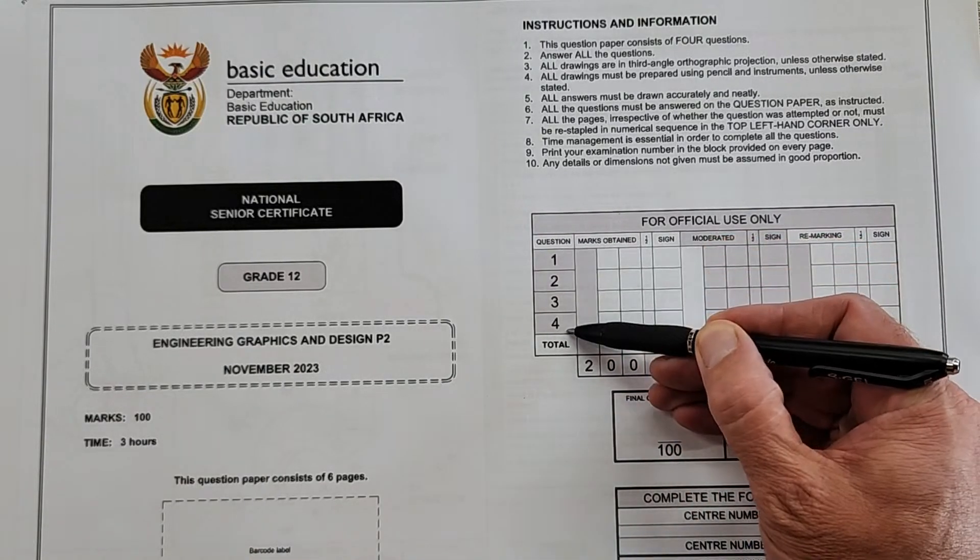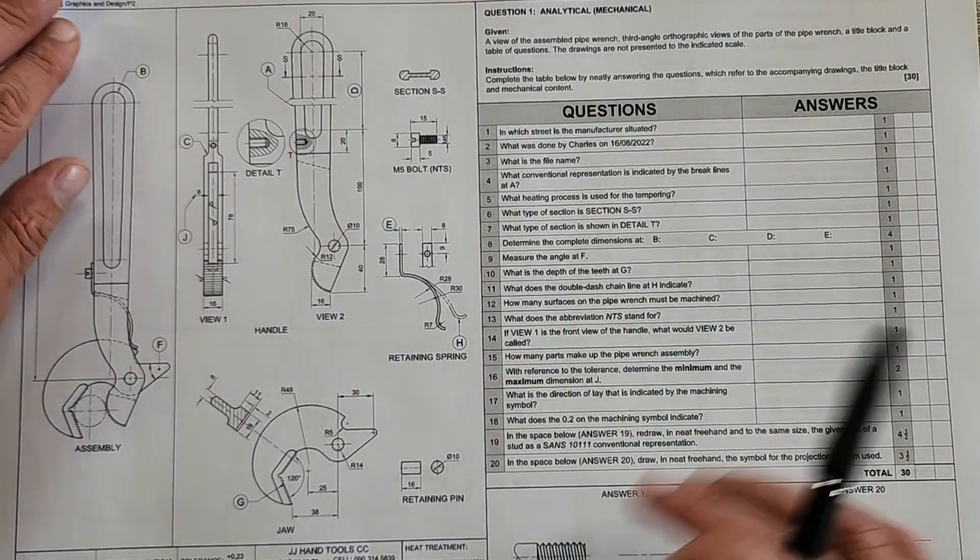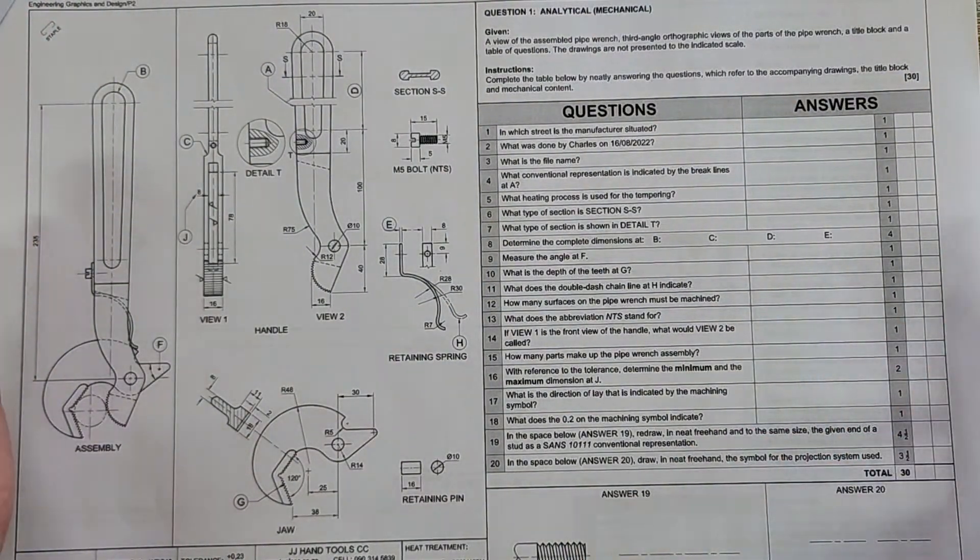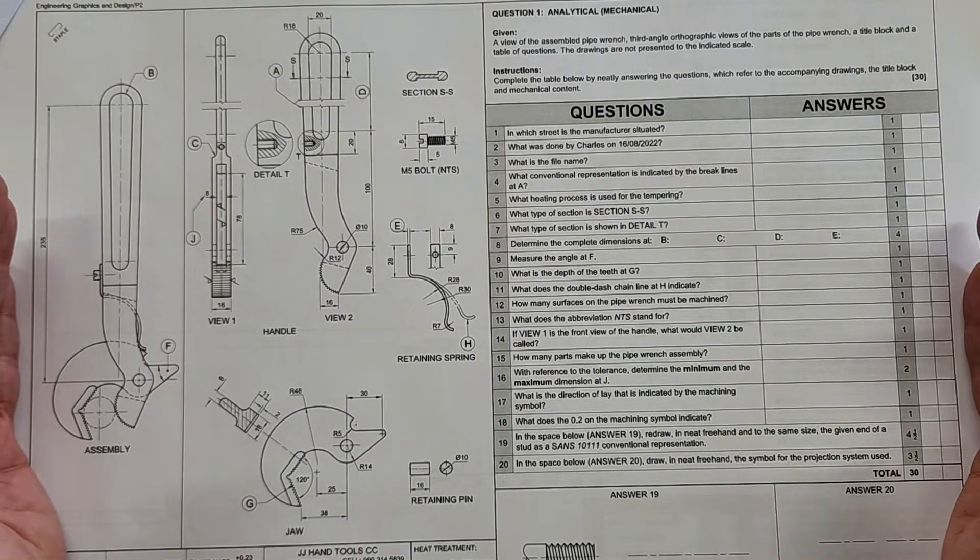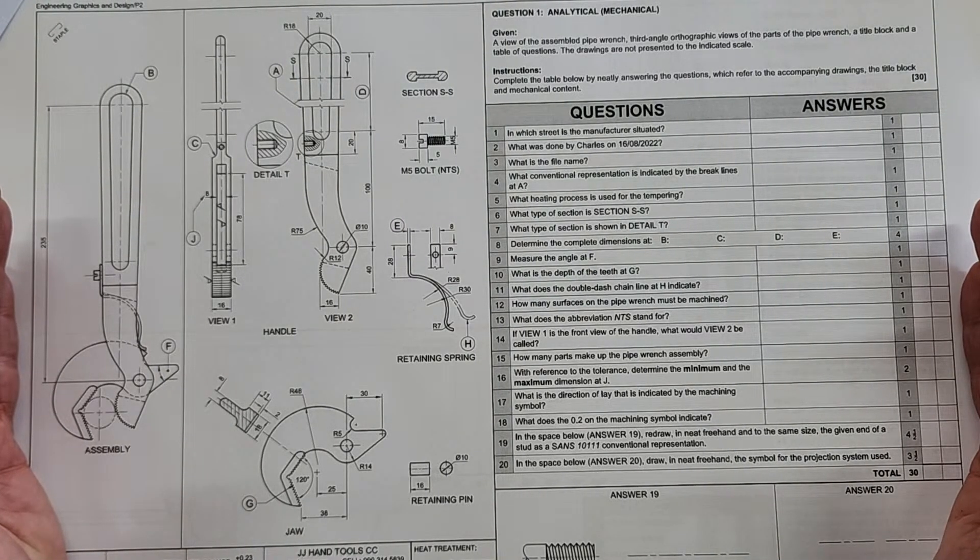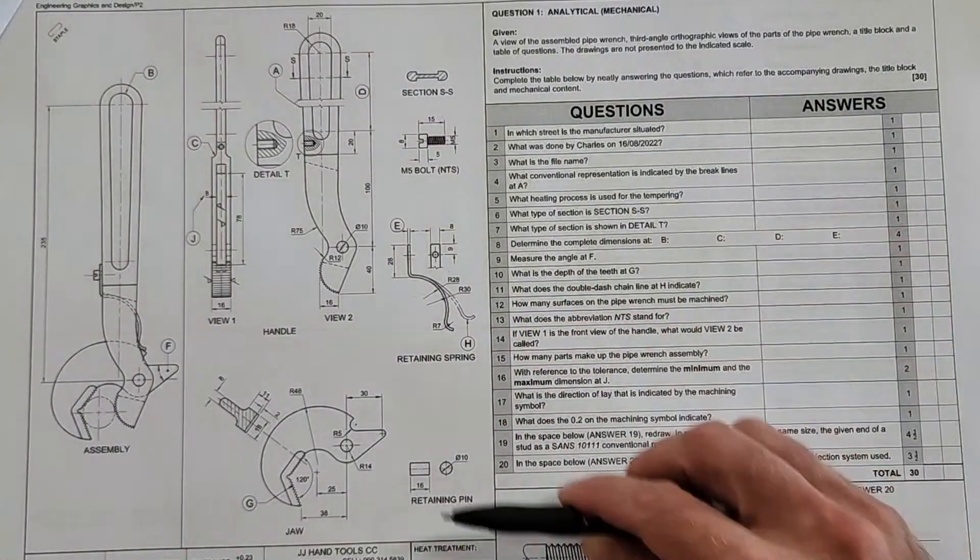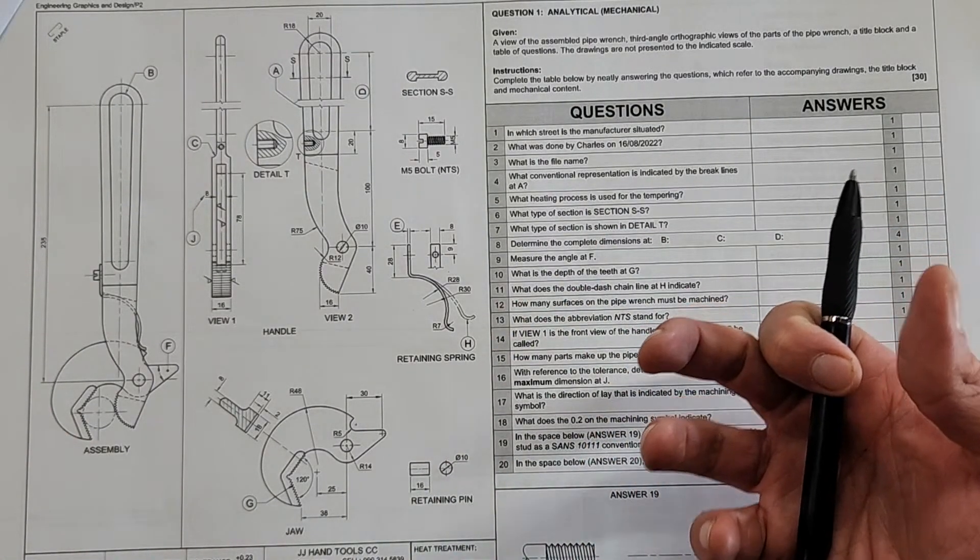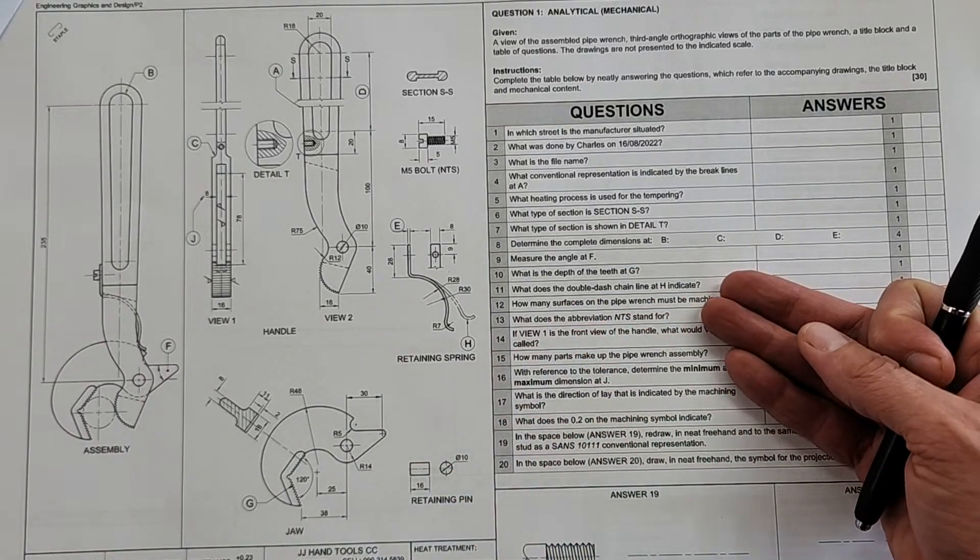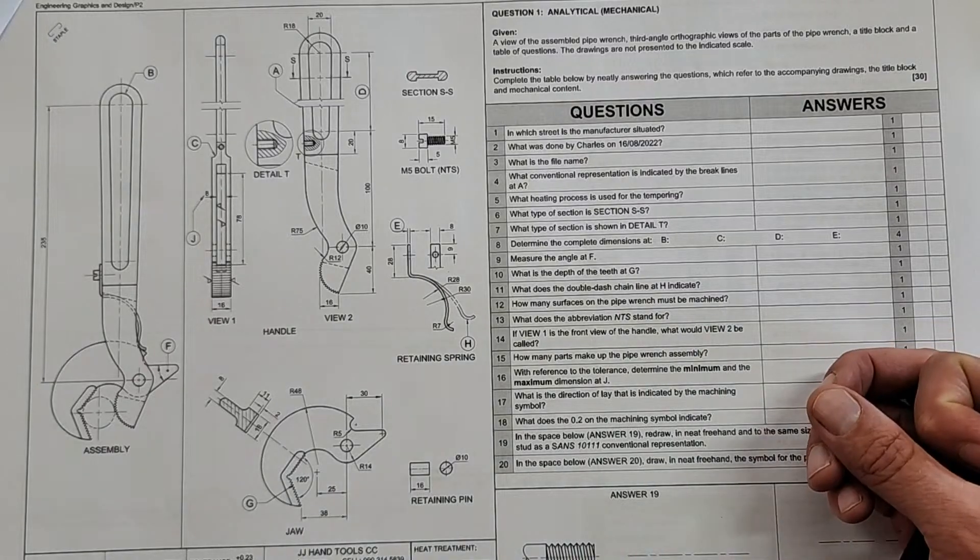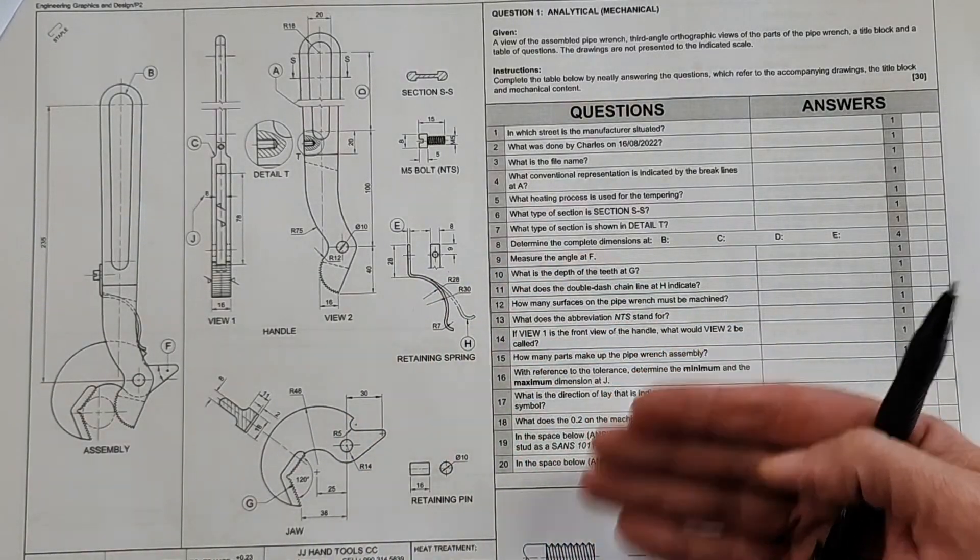This was November 2023, and you all know the standard expectations: 200 marks, you're going to get four questions, and you've got three hours for this paper. Now you can expect when paging through this paper as you receive it that it's going to be of a high standard. It is Grade 12 and it is your final paper. Even last year there were a couple of things here that learners had to interpret based on their knowledge and skills that they've acquired from Grade 10 to 12.